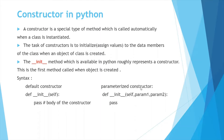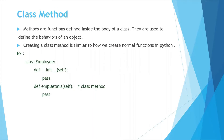Now let's see class methods. Methods are functions defined inside the body of the class, and they are used to define the behavior of the object. Creating a class method is similar to how we create a normal function in Python. Unlike constructors, we do not need to call class methods explicitly — wait, actually class methods do need to be called explicitly using the object, whereas constructors are called automatically when an object is created.